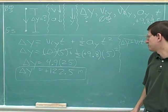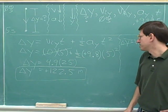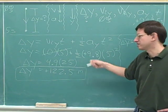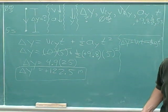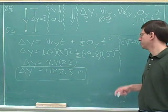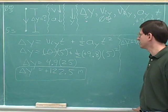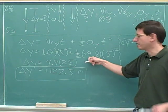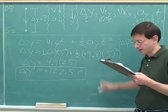And sometimes we'll choose up as our positive direction, but if we choose down as our positive direction, then the acceleration will be positive 9.8. And we're going to try not to actually use the symbol g too much, because that can be a little bit confusing. Instead of using g, we're just going to write down the number, 9.8, and then indicate what the sign is.